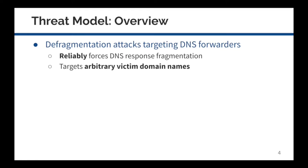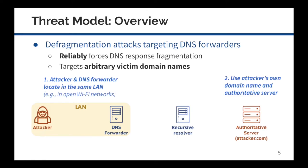We present a cache poisoning attack which targets DNS forwarders. The attack is based on DNS response fragmentation, and attackers can use their controlled domain names to poison any victim domain. In our threat model, the attacker and DNS forwarder are located in the same local network. This setting can occur in an open Wi-Fi network, such as those of coffee shops and airports, or an enterprise network with guests. On the other side, the attacker establishes a controlled authoritative server.